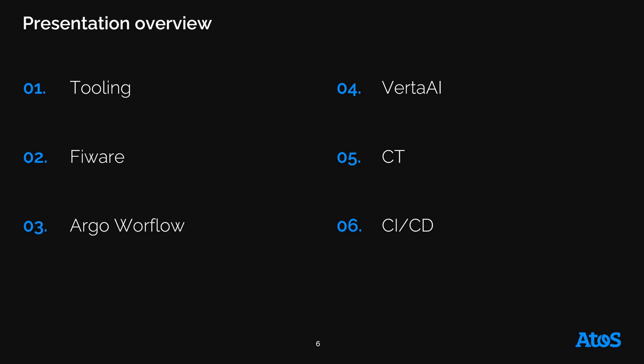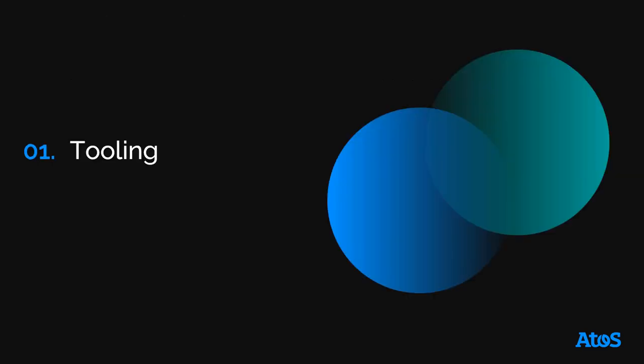After this introduction, let's take a look at the content of this presentation. We will start by reviewing the set of tools and libraries used to implement MLOps in an AI project. Then we will see for each of these tools which features have been useful in terms of methodology to help us industrialize our AI models. So let's begin by listing all the tools used for the project.